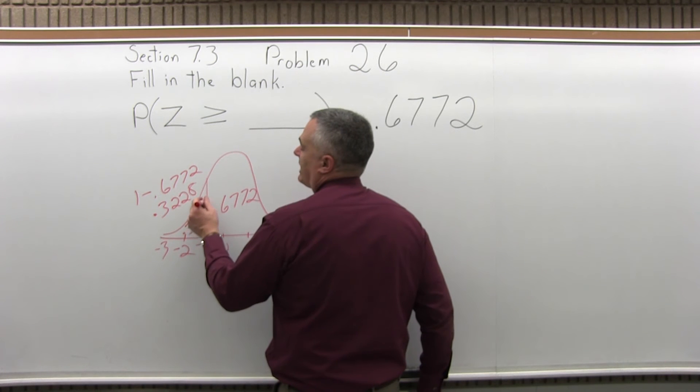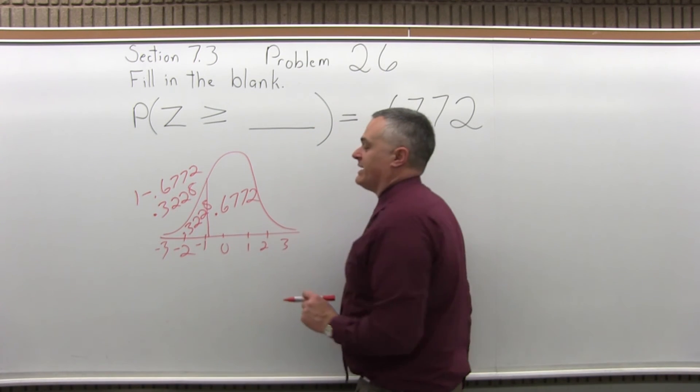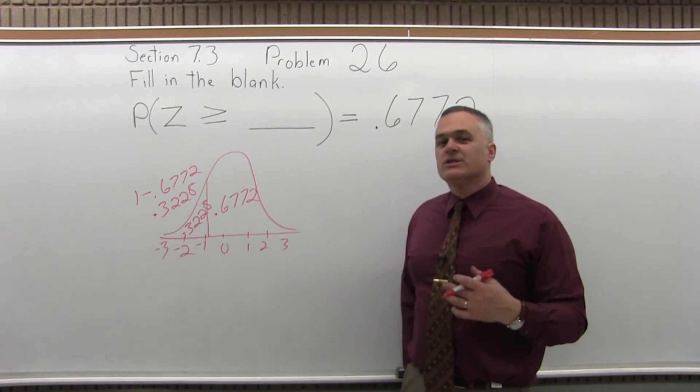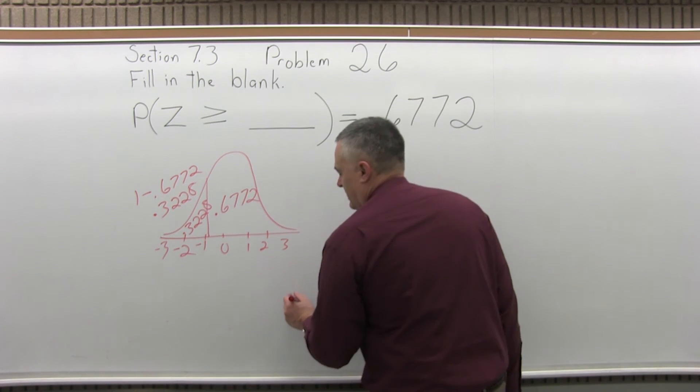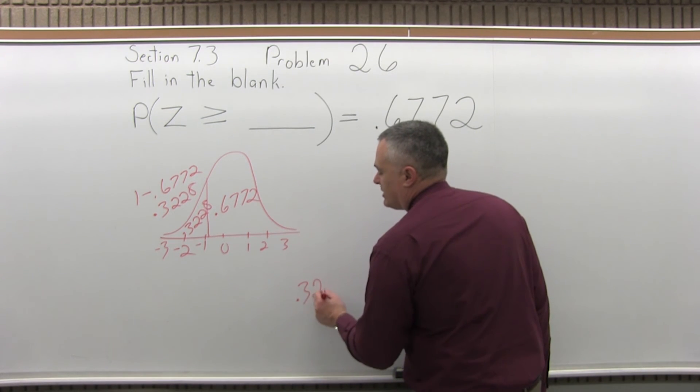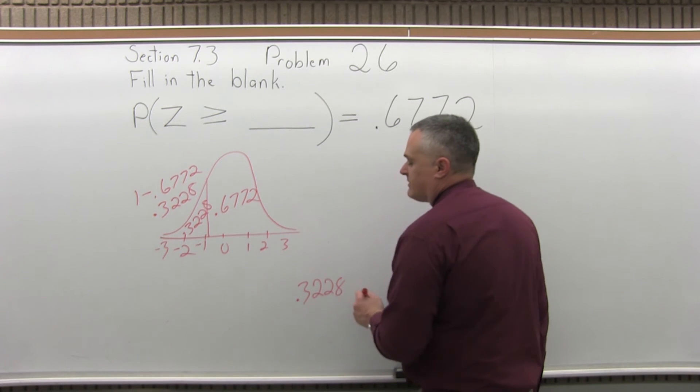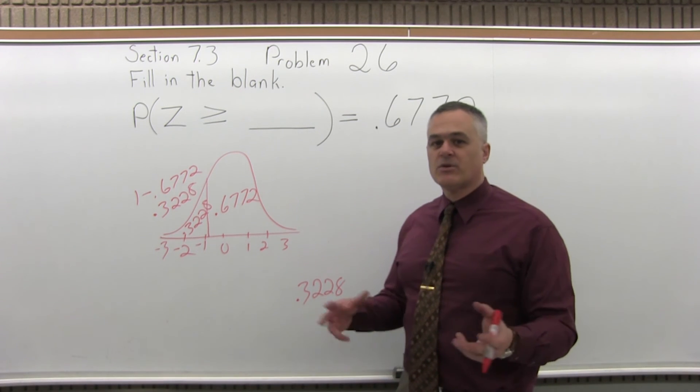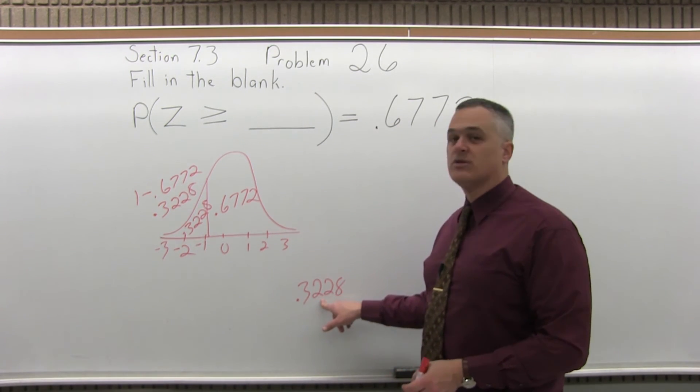That's what's to the left of the value I have to find, the 0.3228. That's what I want to find in the middle of the chart. The numbers in the middle of the chart, they do go in order. They get bigger progressively. So wherever you start, you can get a little bigger or a little smaller until you get to the 0.3228.